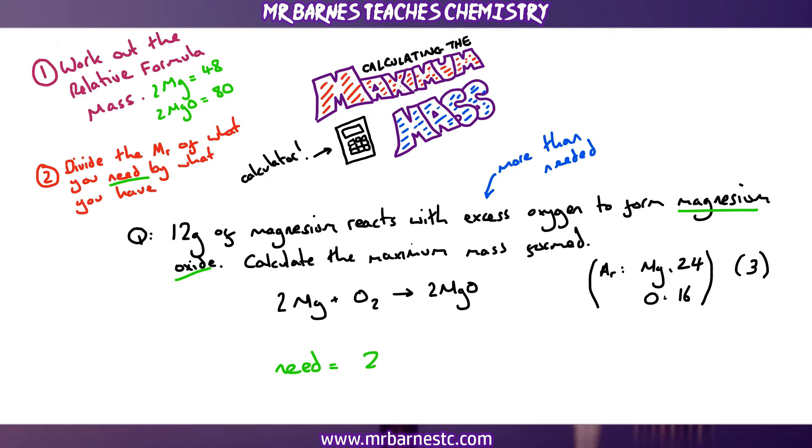Now we worked that out before. Magnesium oxide had a relative formula mass of 80. And then we divide that by the mass, the other formula mass that we've worked out. We worked out the magnesium. That's the thing that we've been given, 12 grams of that. So I put in 48. That was my formula mass for my two magnesiums. So I divide 80 by 48. And that gives me 1.67.